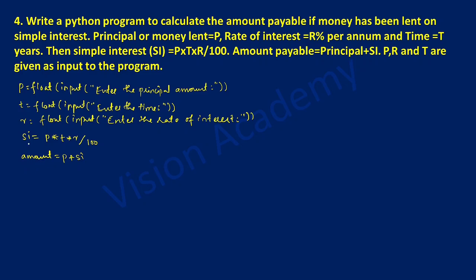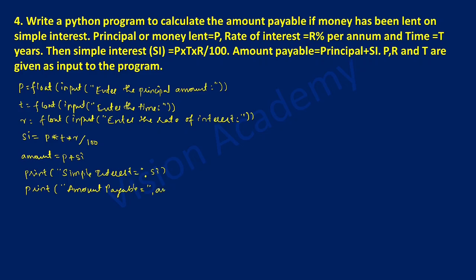Now let us print the values stored in SI and amount. I am going to use the print statement. Inside the print I am going to write in double quotation marks: simple interest is equal to. Then put a comma and write the variable SI. Next we will print amount payable — in double quotation marks: amount payable is equal to — then comma and the variable amount. Close the bracket.